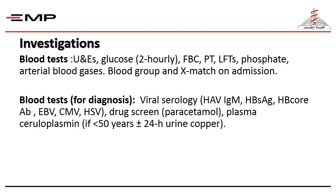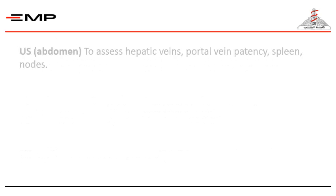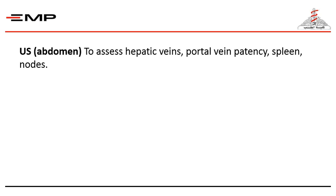Diagnostic blood tests include virus serology for all potentially causative viruses, drug screening, and plasma ceruloplasmin. Bacteriology includes blood cultures as well as urine, sputum, throat, and vaginal swabs with culture and sensitivity including fungal cultures. Ultrasound of the abdomen is done to assess hepatic veins, portal vein patency, and the condition of the spleen and lymph nodes.